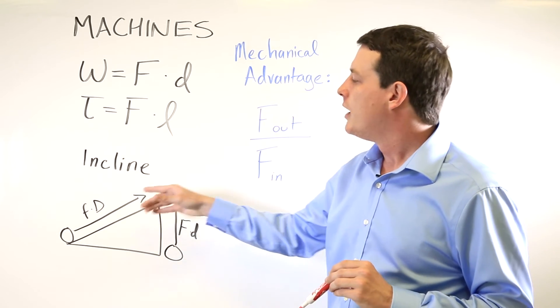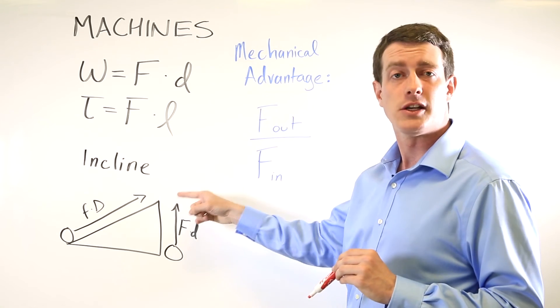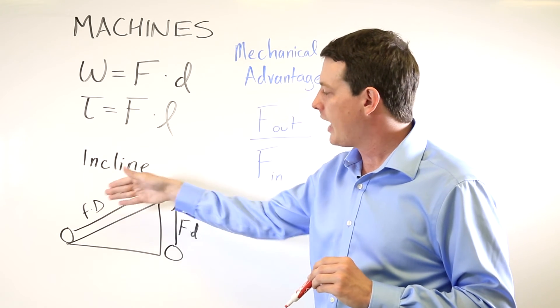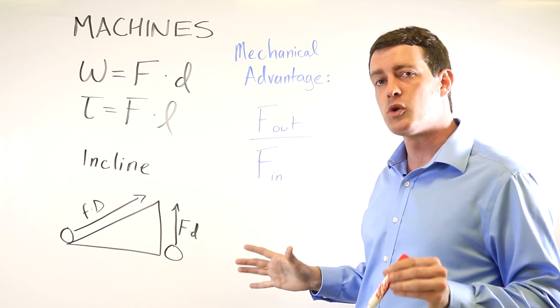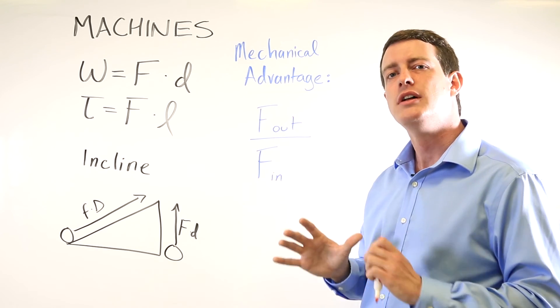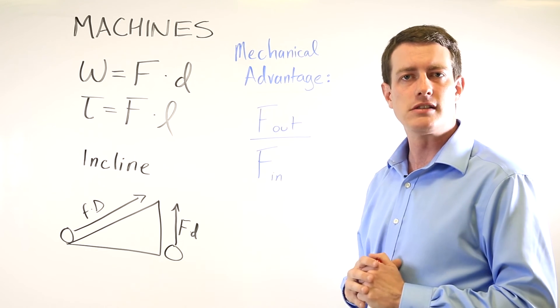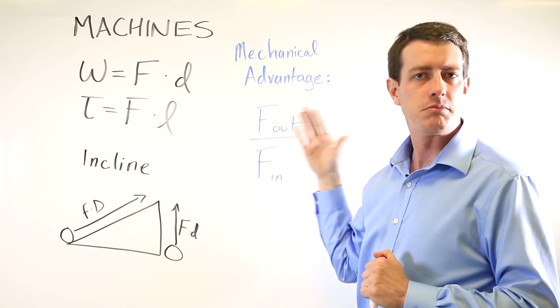The machine helps you by increasing the amount of distance that you do the work over, but at the same time that allows you to decrease the amount of force necessary. So that is how machines work on the MCAT, and we'll go through examples of all the different types of machines using this general principle to guide our discussion.